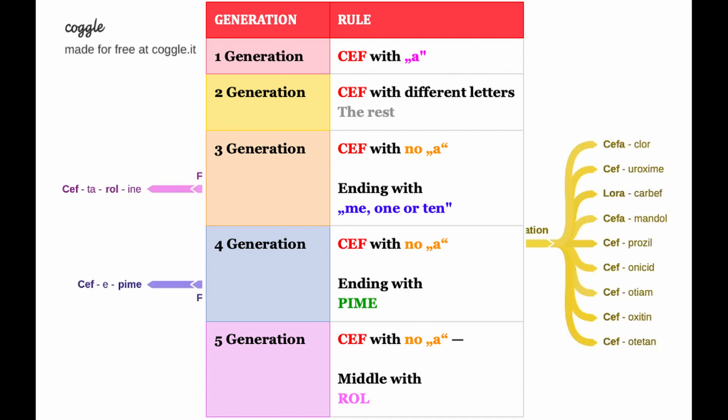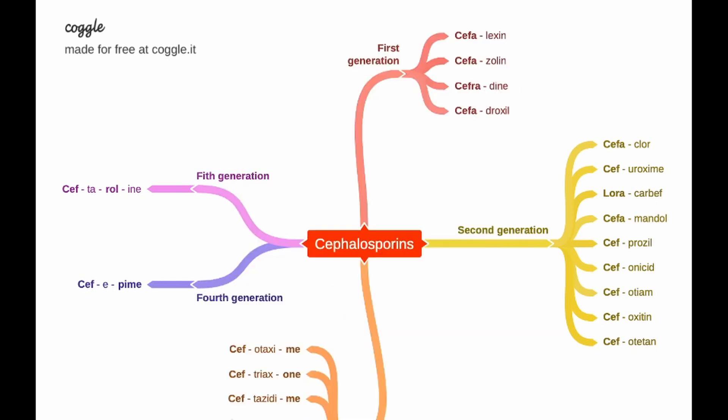Let's start with the first generation. The rule is, remember for the first generation, cephalexin, cephalexin with 'a' as we discussed.